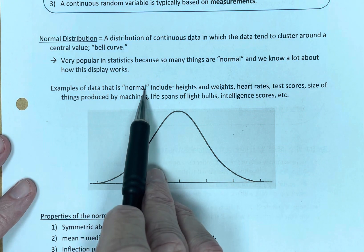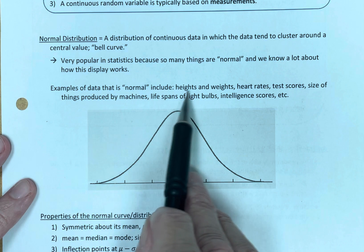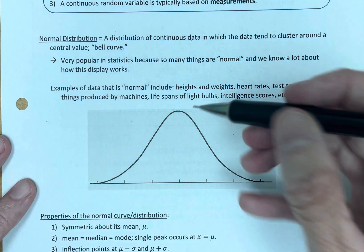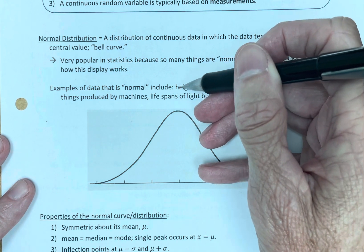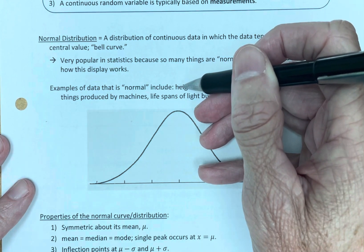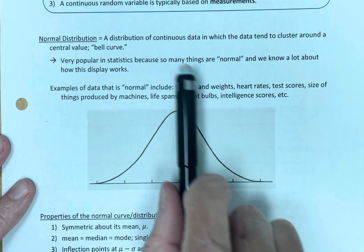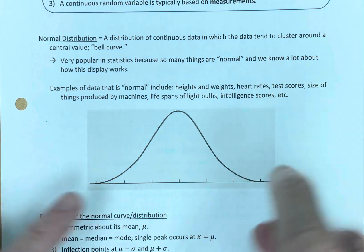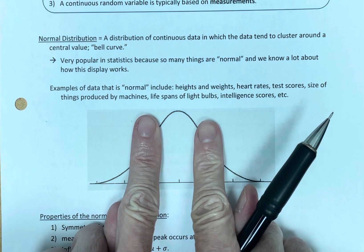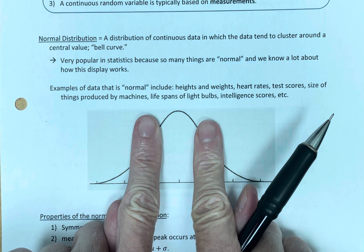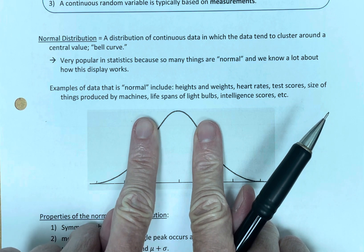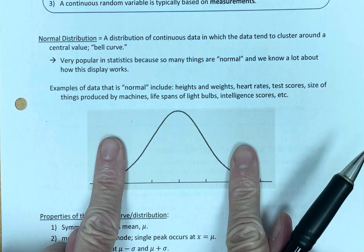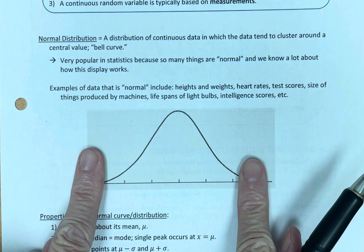Examples of data that are normal: heights and weights. Take the height of American females. Well, there tends to be an average height, and most people tend to be close to that. Most American adult females tend to be close to that average height. The further you get away from the average, the fewer and fewer females there are in that category.